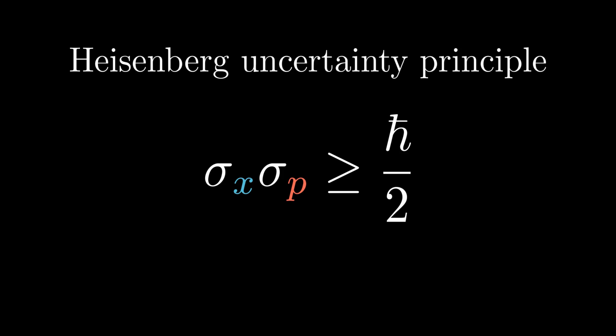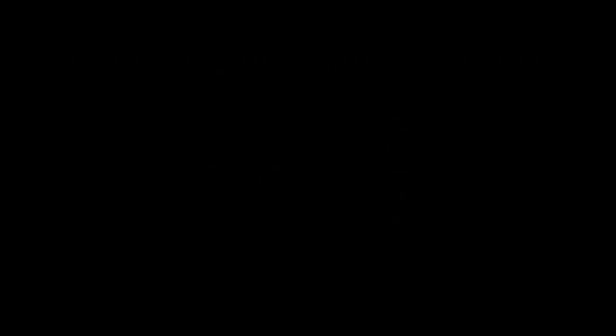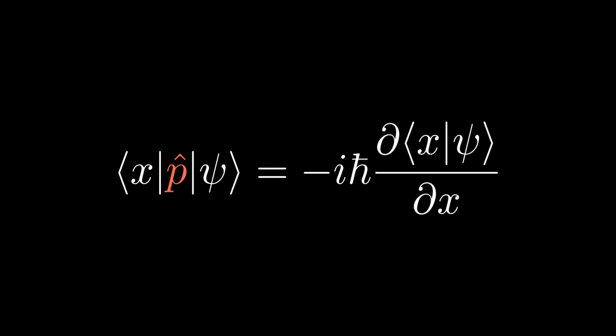To see the uncertainty principle in physical space, we need to work with wave functions. We now take another result we'll prove in the next chapter. The momentum operator in position representation is given by the equation on the screen. It is left as an exercise for the audience to check the equation is consistent with the canonical commutation relation.